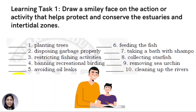Number 1: planting trees. Number 2: disposing garbage properly. Number 3: restricting fishing activities. Number 4: banning recreational boating. Number 5: avoiding oil spills.